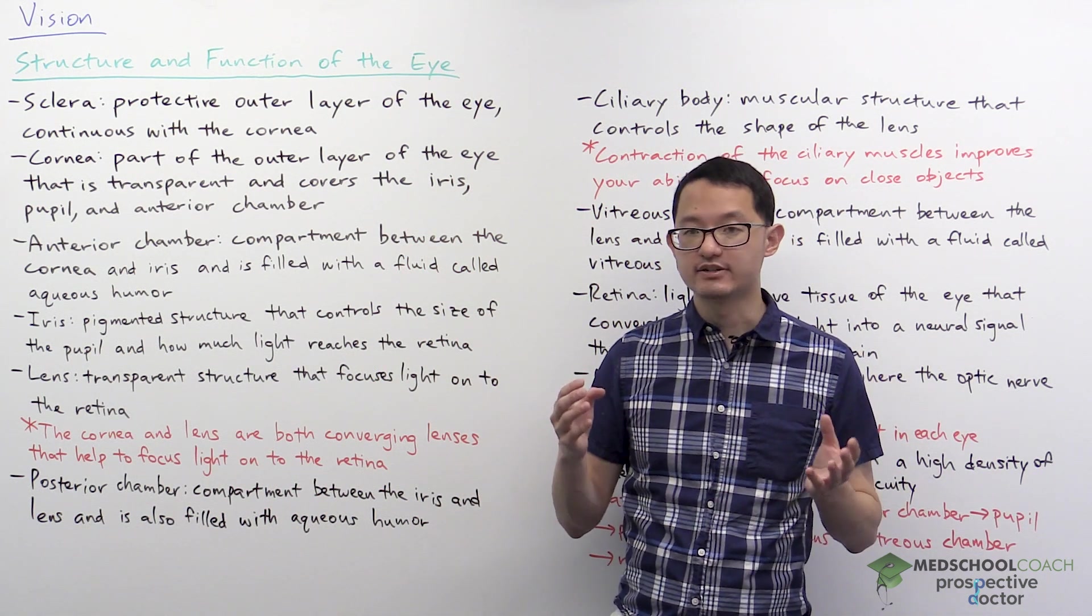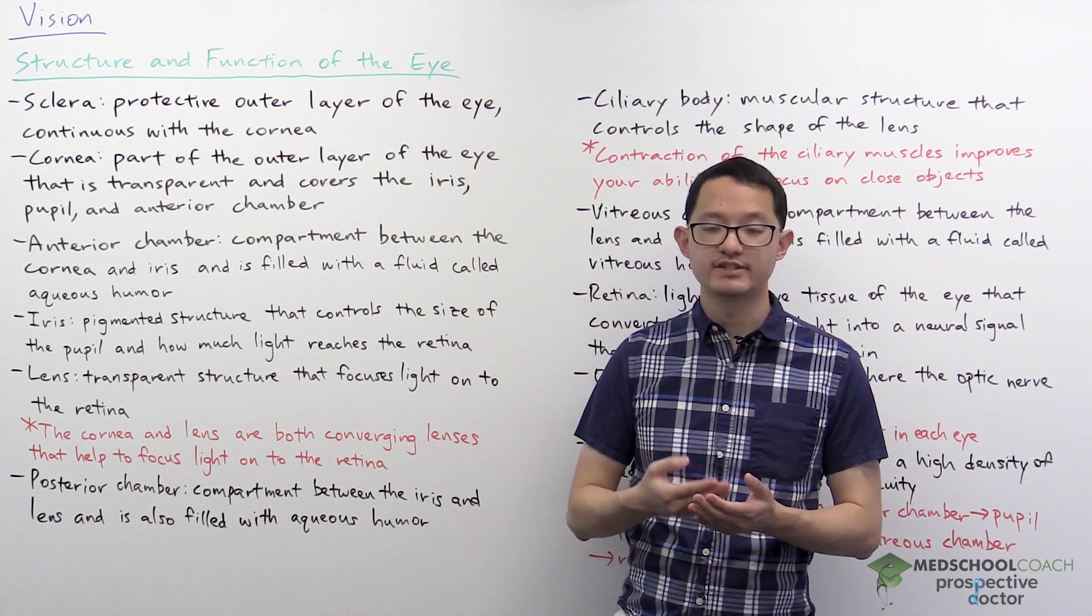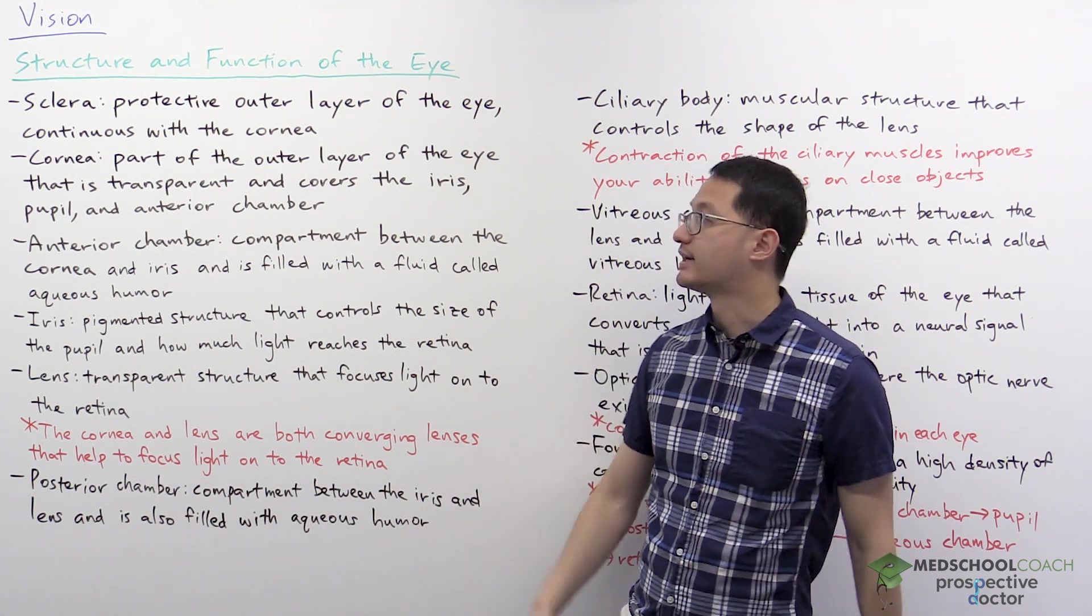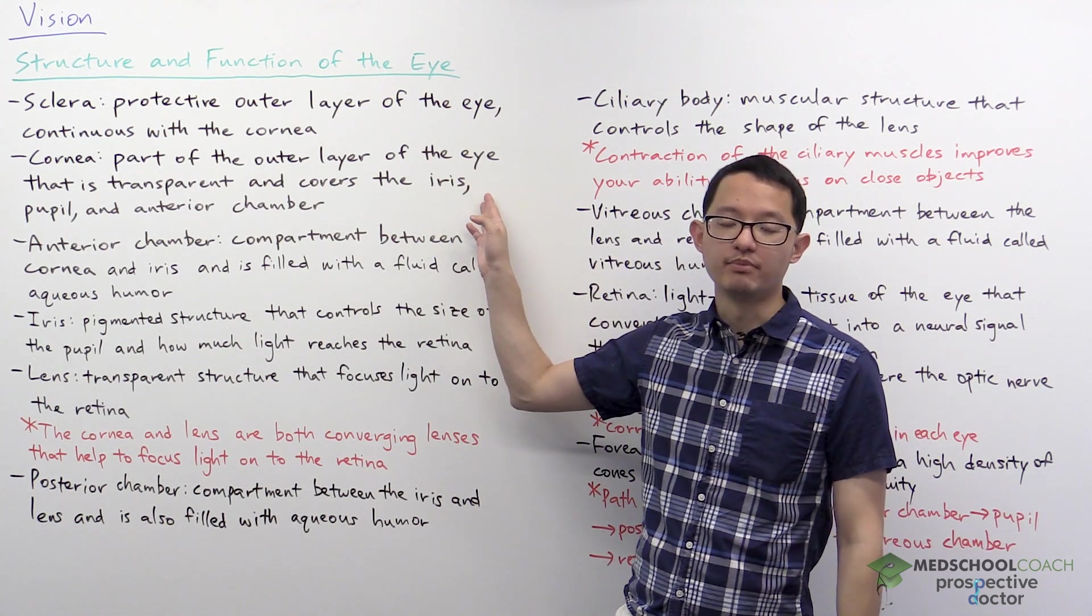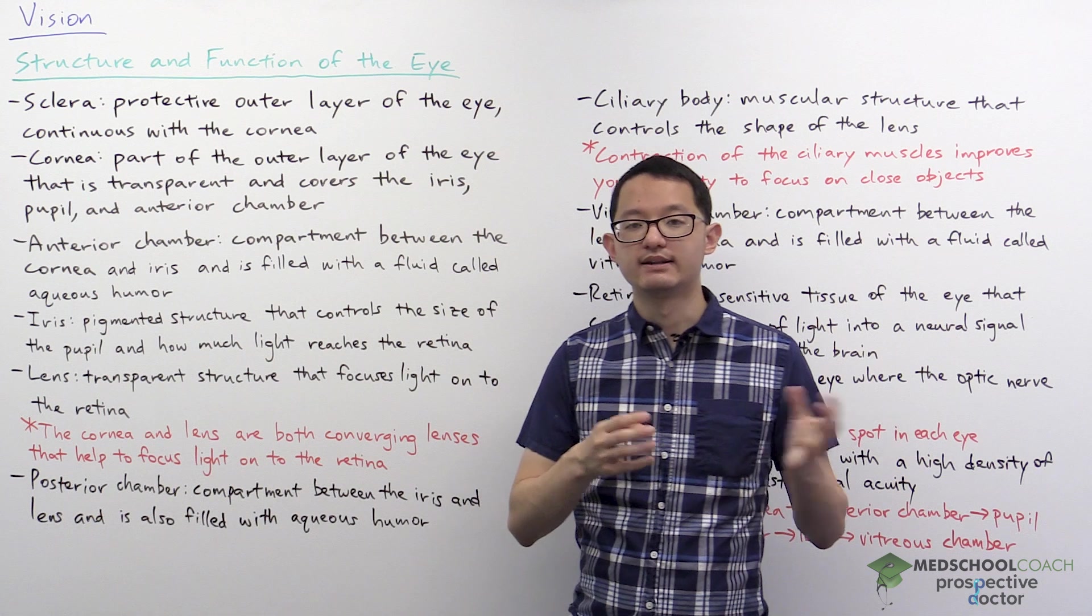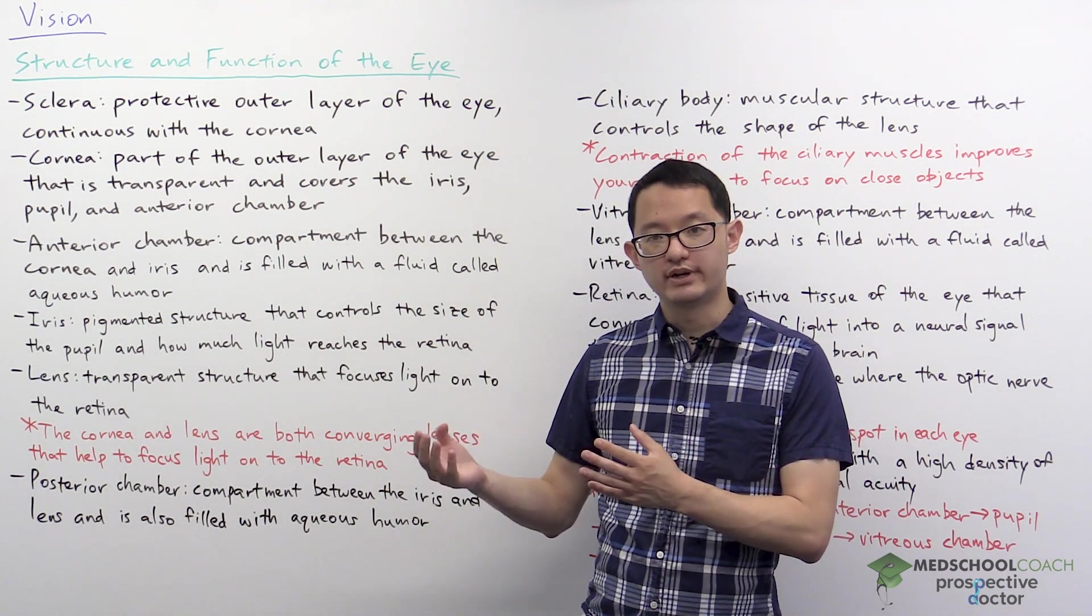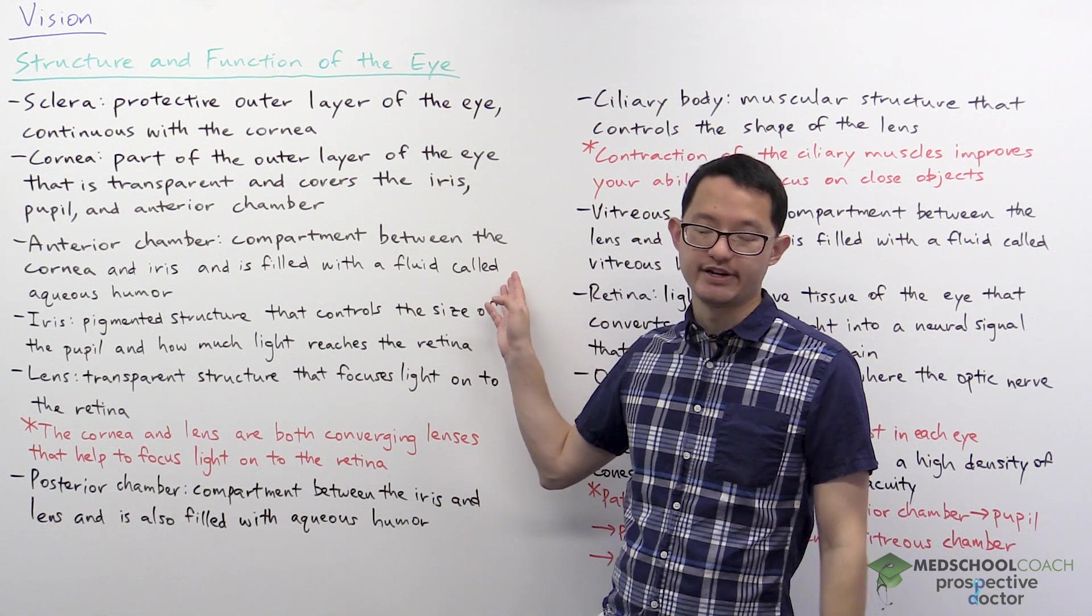The cornea is actually continuous with the sclera, except the cornea is a transparent structure and it covers the iris, pupil, and anterior chamber. Because the cornea is transparent, it allows light to pass through it. And once it passes through the cornea, the light will reach the anterior chamber.